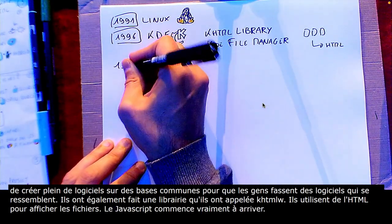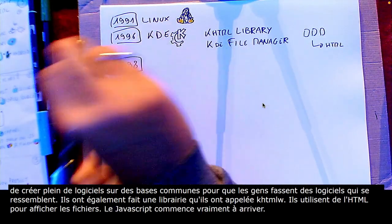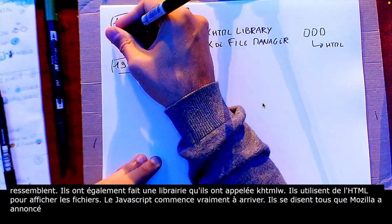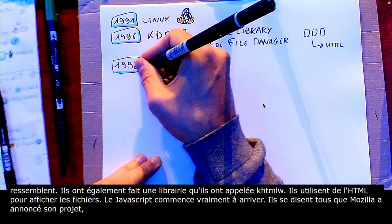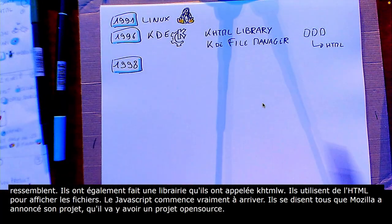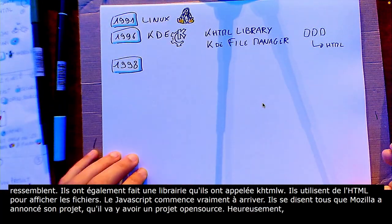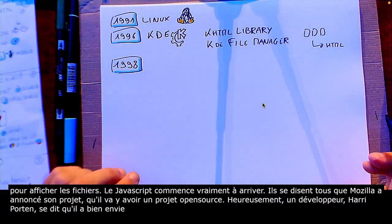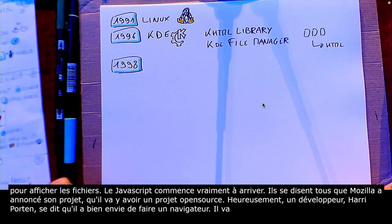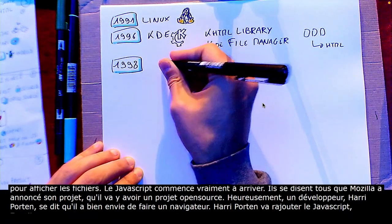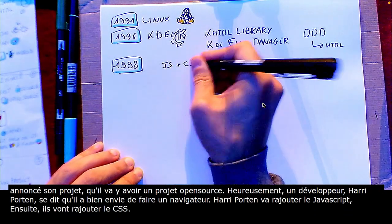Ils se disent tous : bon, Mozilla a annoncé son projet, il va y avoir un projet open source, on n'a pas besoin de s'embêter avec ça. Heureusement, il y a un développeur, Harry Porton, qui se dit : moi aussi, pour le fun, j'ai bien envie de faire un navigateur. Et donc, c'est Harry Porton qui va ajouter le JavaScript, ensuite ils vont ajouter le CSS, et finalement, en octobre 2000, KDE 2 sort avec Konqueror, un super navigateur que tout le monde utilise aujourd'hui.